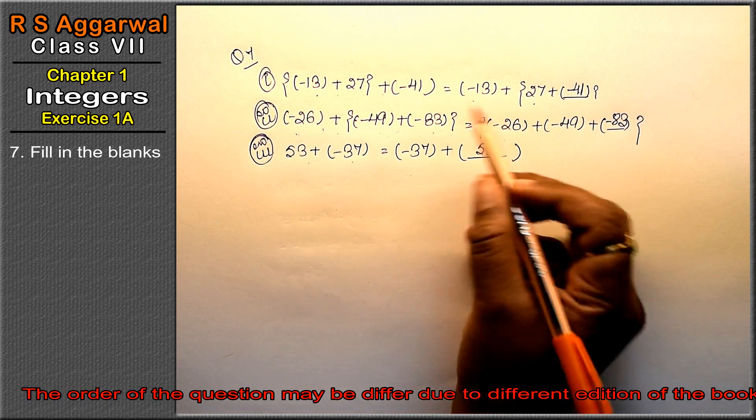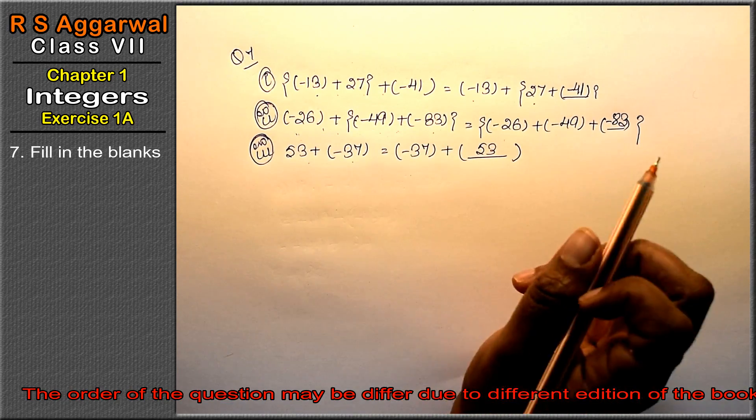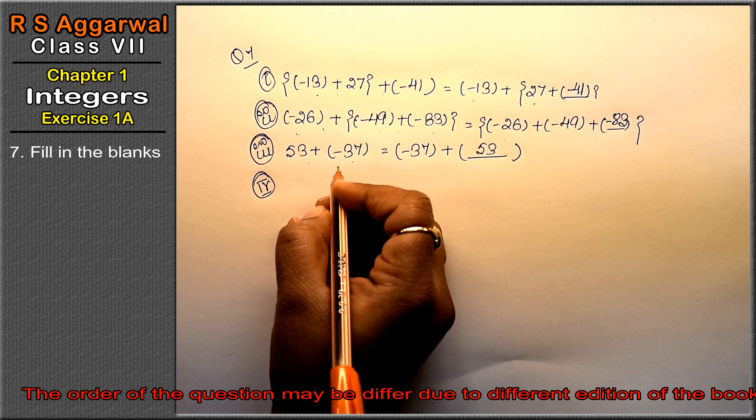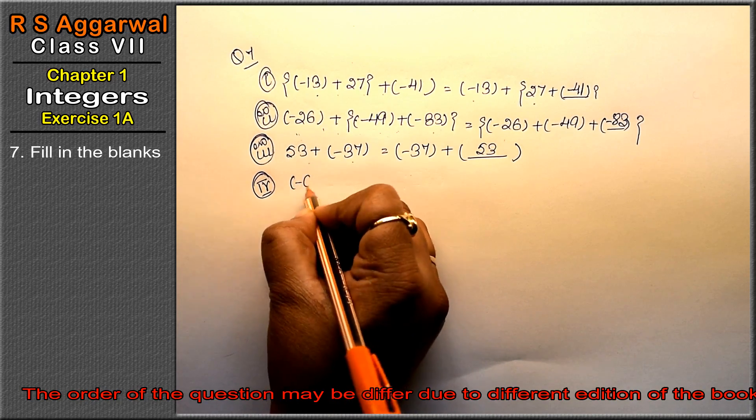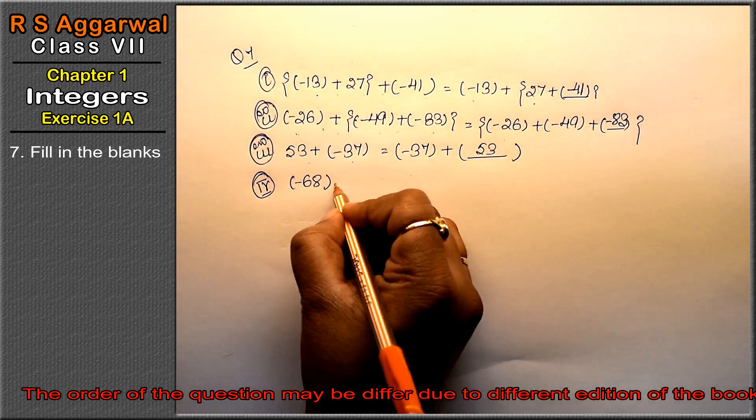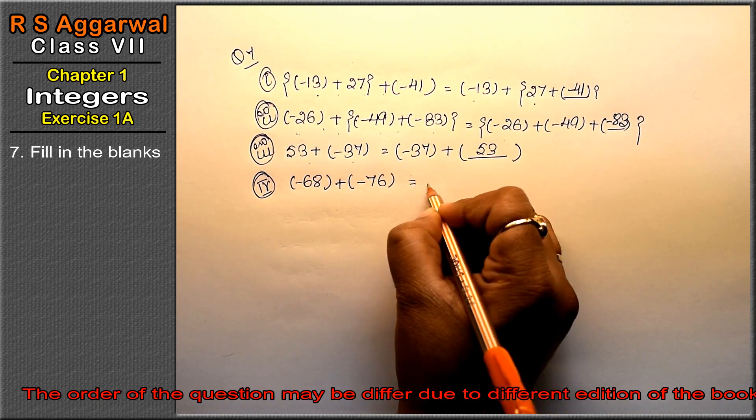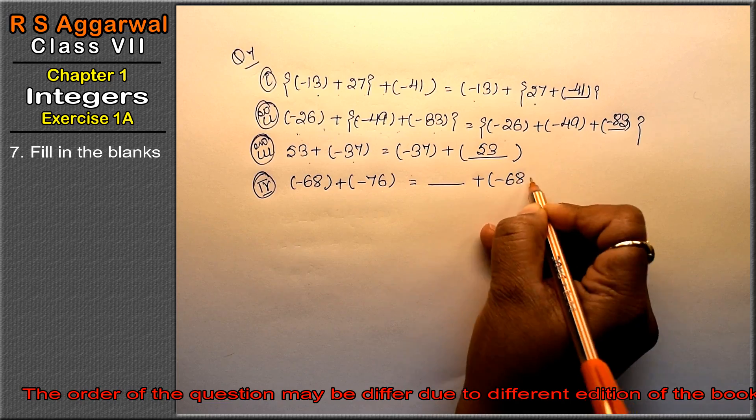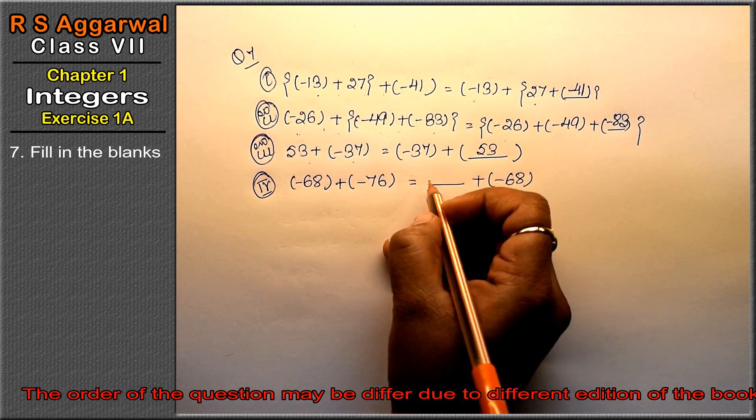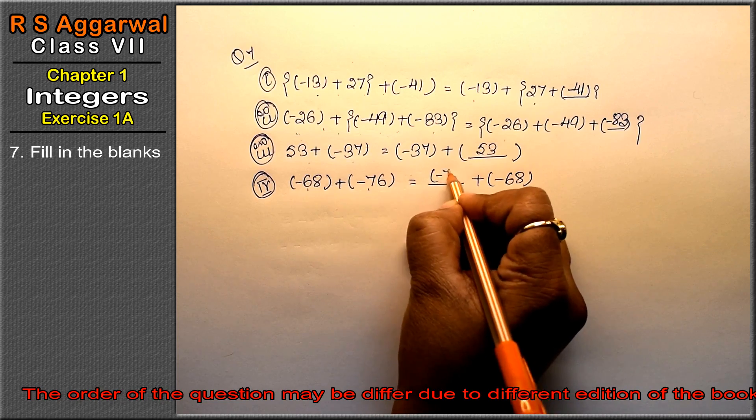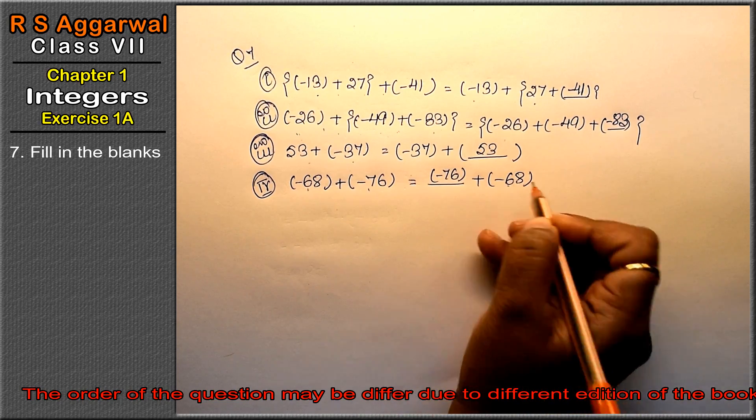Fourth part: minus 68 plus minus 76 equals dash plus minus 68. Friends, this is our commutative property: A plus B or B—B is minus 76—plus A.